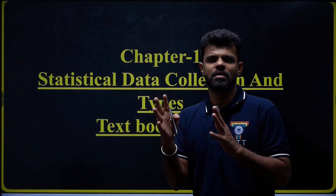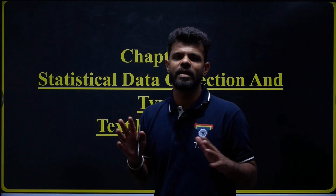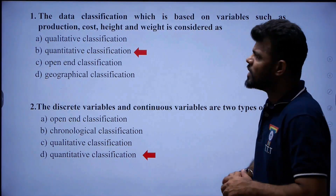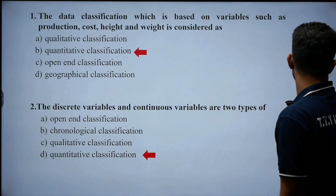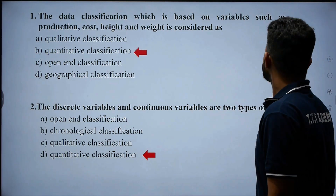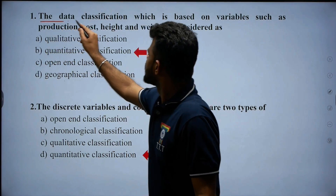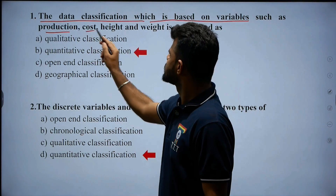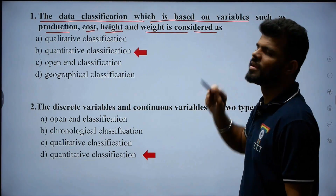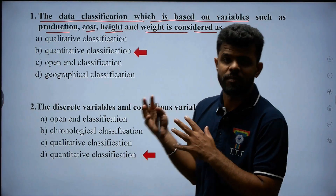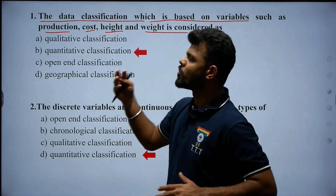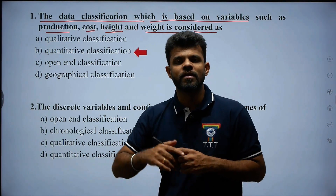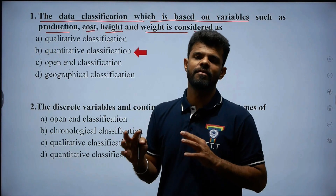For each chapter, we will discuss all the MCQs based on the variables. Starting with question number one: data classification based on variables. The data classification which is based on variables such as production, cost, height, and weight — what are all these variables? Those variables are called as quantitative variables.